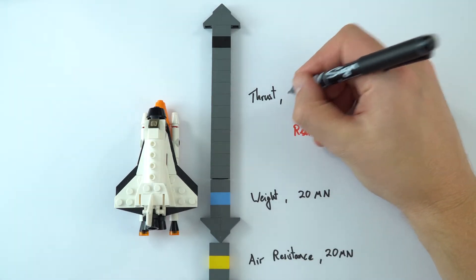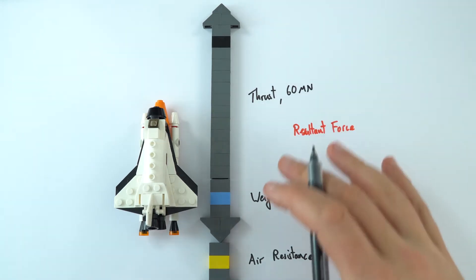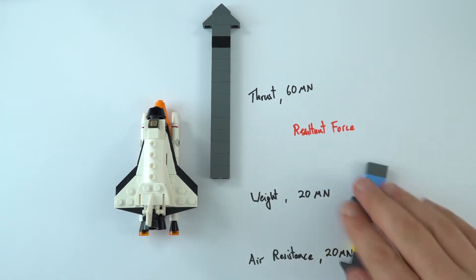And let's imagine the thrust at this time was equal to 60 mega newtons. So we're talking big numbers with something like this. So what's the resultant force going to be? Well, what we can do is basically, because these are all in one kind of up or down direction, we can just start to add or take them away. So if I just move these to the side,